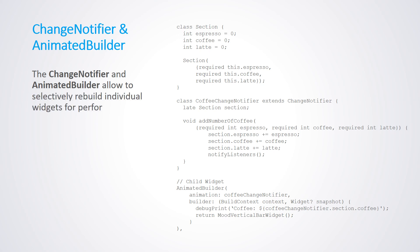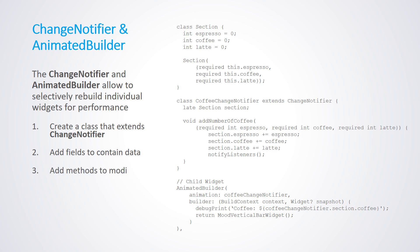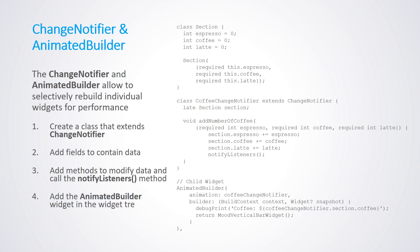What are the steps? First, create a class that extends ChangeNotifier. Second, add fields to contain data. Third, add methods to modify the data and call the notifyListeners method. Fourth, add the AnimatedBuilder widget in the widget tree to rebuild widgets selectively if the data changed.